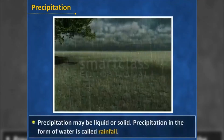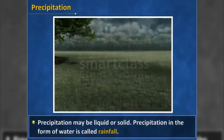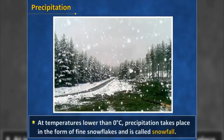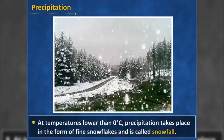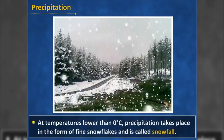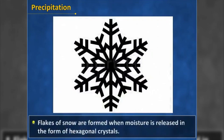Precipitation may be liquid or solid. Precipitation in the form of water is called rainfall. At temperatures lower than zero degrees Celsius, precipitation takes place in the form of fine snowflakes and is called snowfall. Flakes of snow are formed when moisture is released in the form of hexagonal crystals.